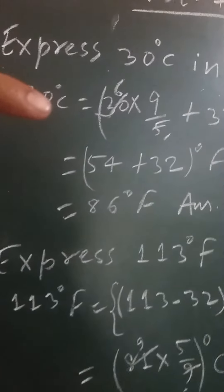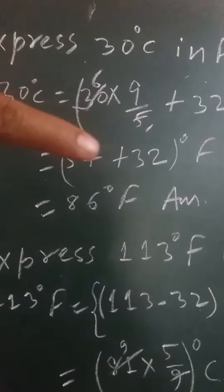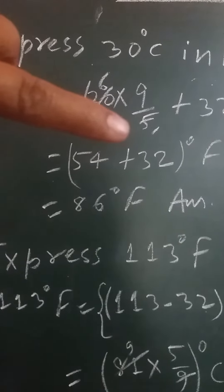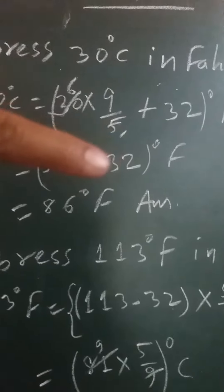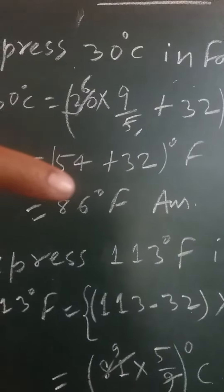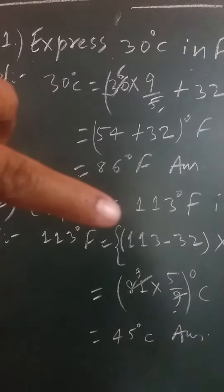We have to see when we change degree Celsius into degree Fahrenheit, at that time we have to multiply the given number with 9 by 5 and then we have to add 32, then we get the answer according to this. Next, when we have to change Fahrenheit into